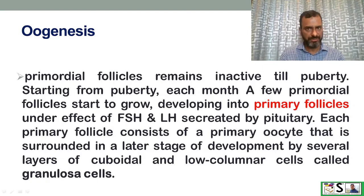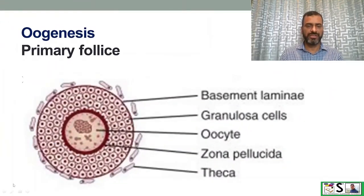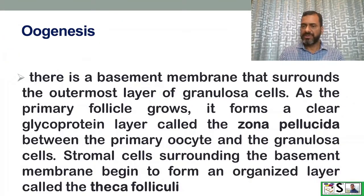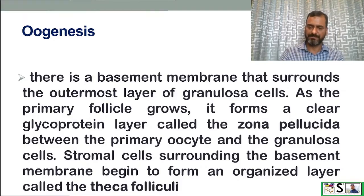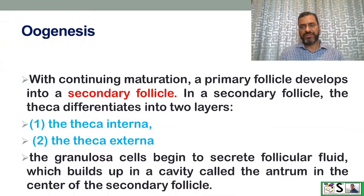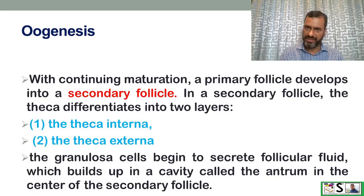Each primary follicle consists of a primary oocyte surrounded by several layers of cuboidal and low columnar granulosa cells. A basement membrane surrounds the outermost layer of granulosa cells. As the primary follicle grows, it forms a clear glycoprotein layer called the zona pellucida between the oocyte and granulosa cells. Stromal cells surrounding the basement membrane form an organized layer called the theca folliculi. With continued maturation, the primary follicle develops into a secondary follicle, in which the theca differentiates into the theca interna and theca externa.